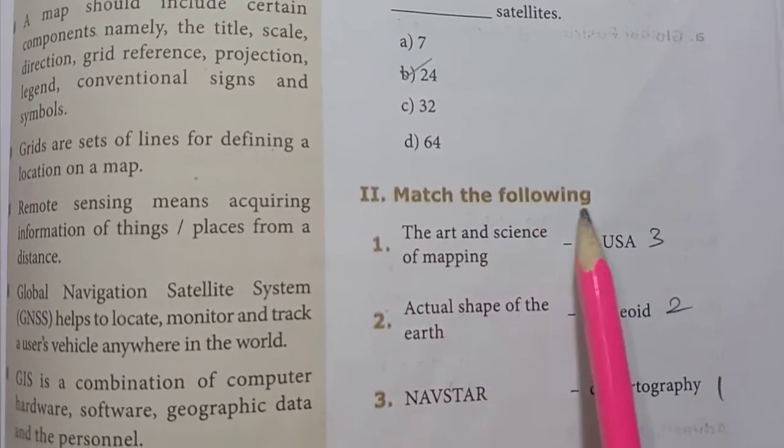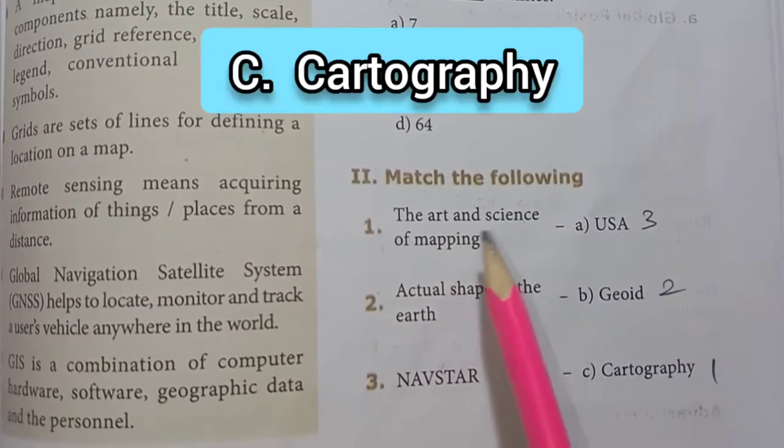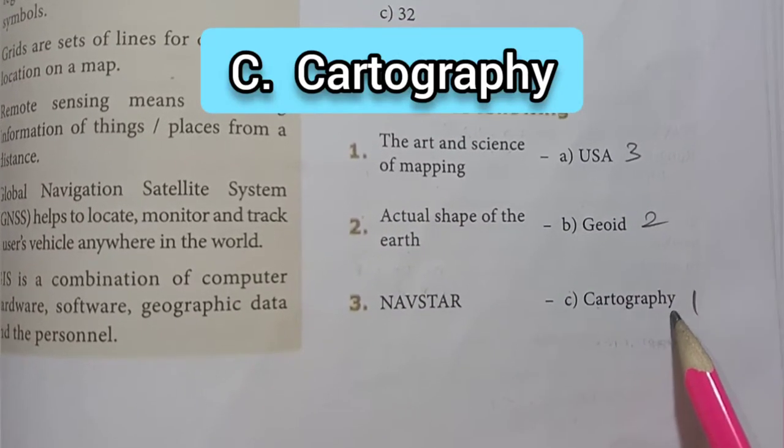Roman numeral 2, match the following. First one, the art and science of mapping, answer is C, cartography.